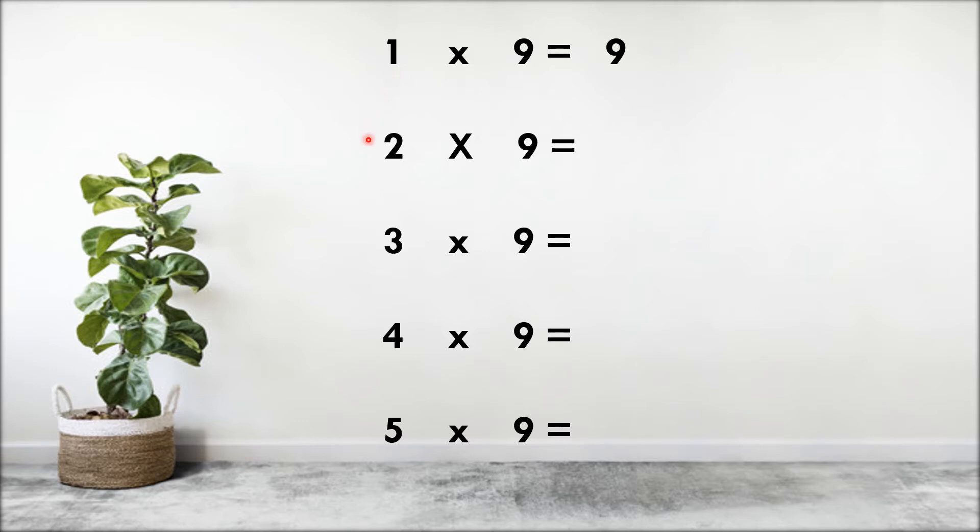The trick is, we have to see the predecessor of this number. That is our first part answer. Predecessor of the 2 is 1, so that will be our first answer. The second part answer is, we have to minus 9 minus 1, so that is 8. So 2 times 9 is 18.